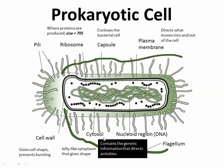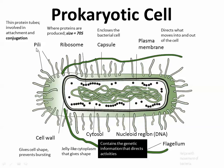The cytosol, or cytoplasm, is the jelly-like cytoplasm that gives the cell its shape. The capsule encloses the bacterial cell. Pili are involved in conjugation — kind of like bacterial sex, though bacteria generally reproduce asexually. That distinction will come a little bit later. The flagellum helps with movement of the bacteria.